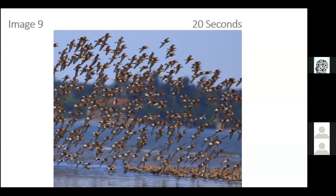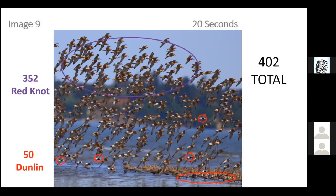Image nine — we'll have 20 seconds. There are 402 birds total with two different species: red knots and dunlin. The dunlin have black bellies in beautiful spring breeding plumage, and there are 50 of them. The red knots have a very rufous orange color, and there are 352 here.